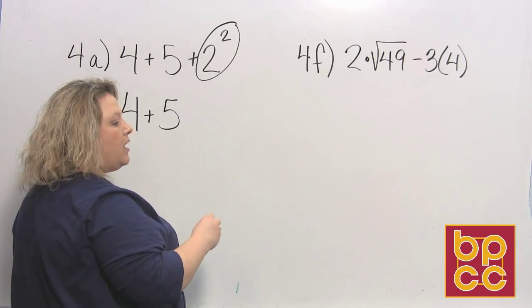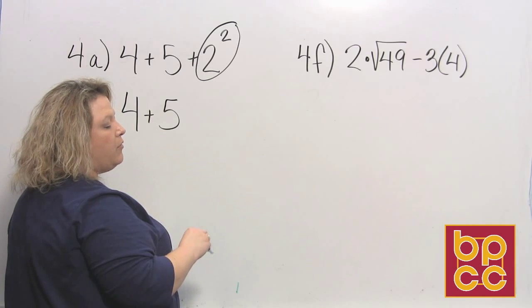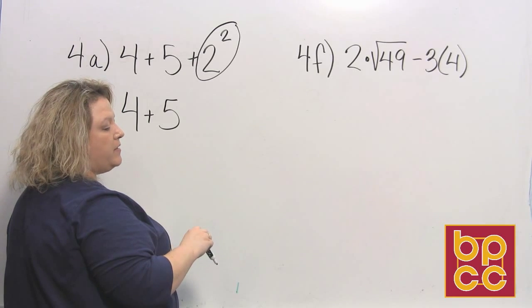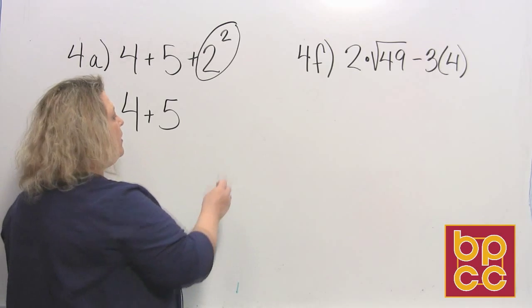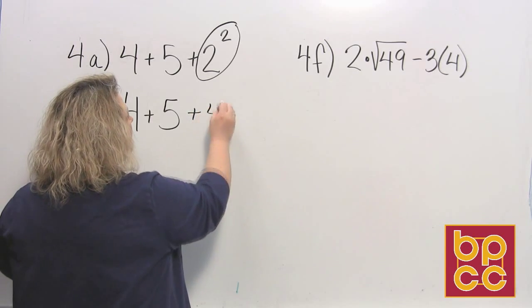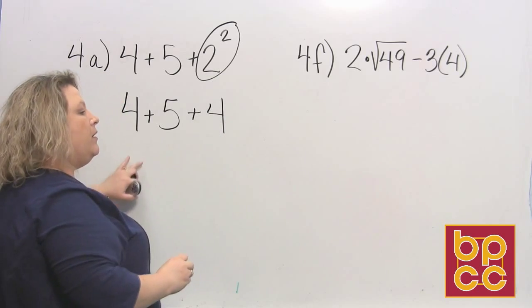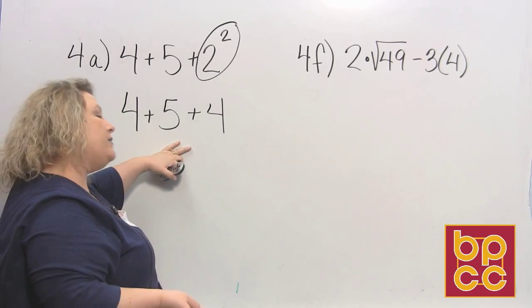Well, a couple of modules ago we talked about exponents, and we said that 2 squared means 2 × 2, so that would be 4. Now you look for multiplying and dividing—I don't see any in this problem.